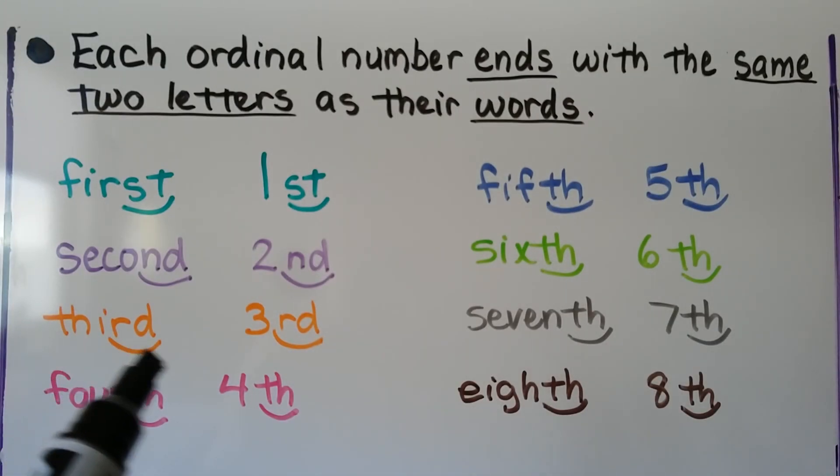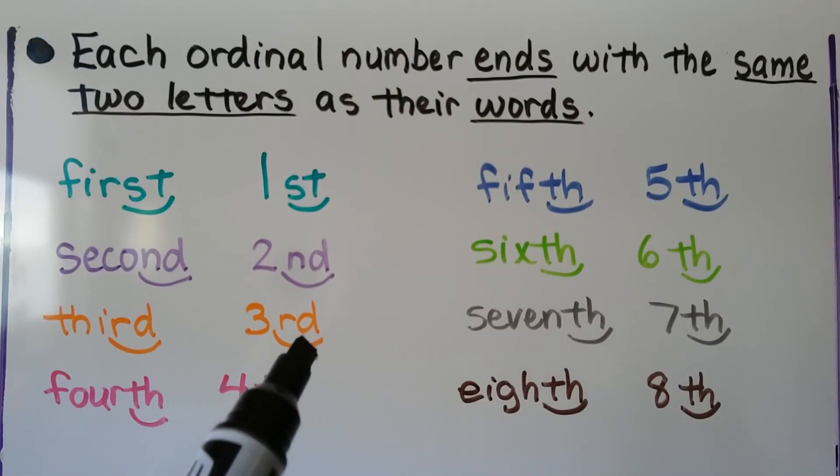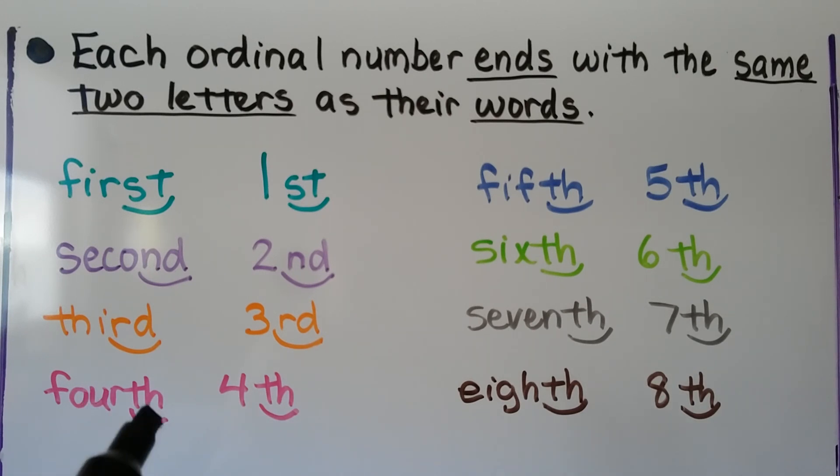Third ends with an RD. We write a 3 and an RD. Fourth ends with TH. We write a 4 with a TH.